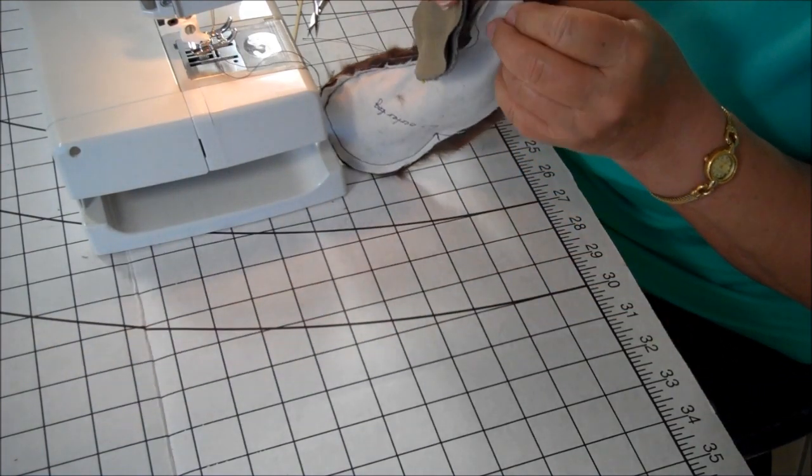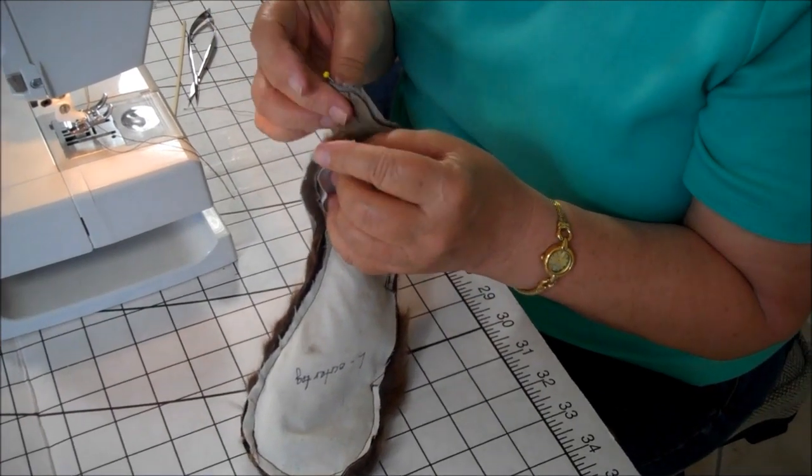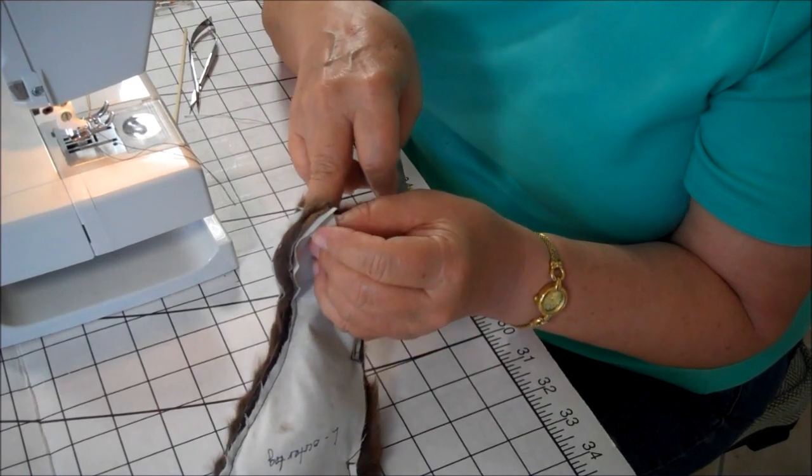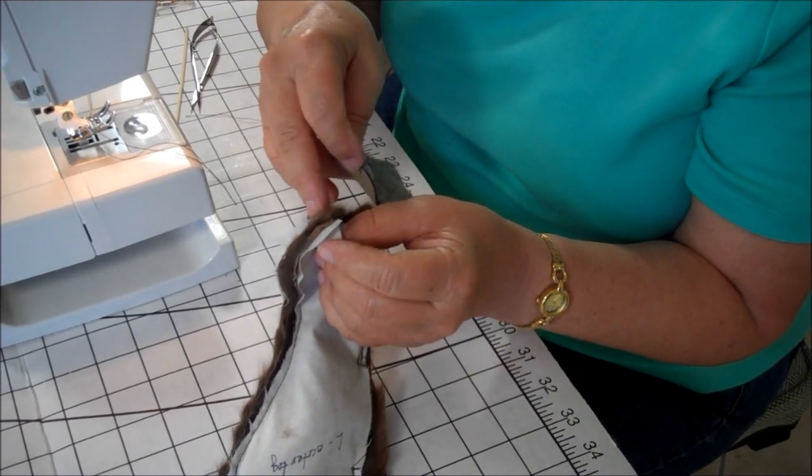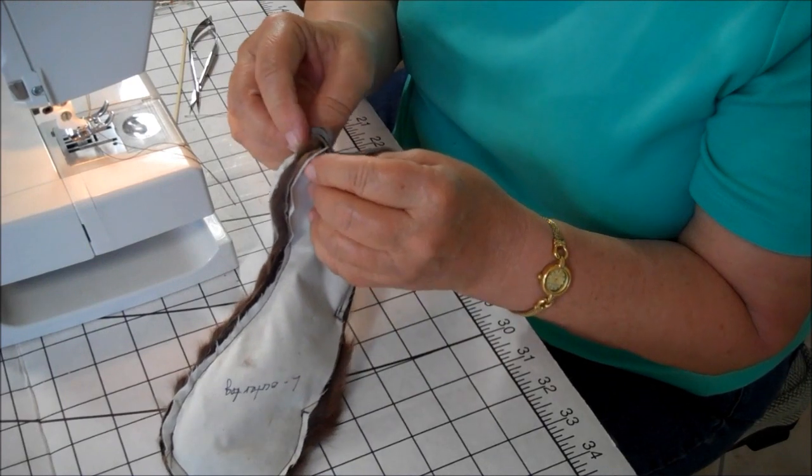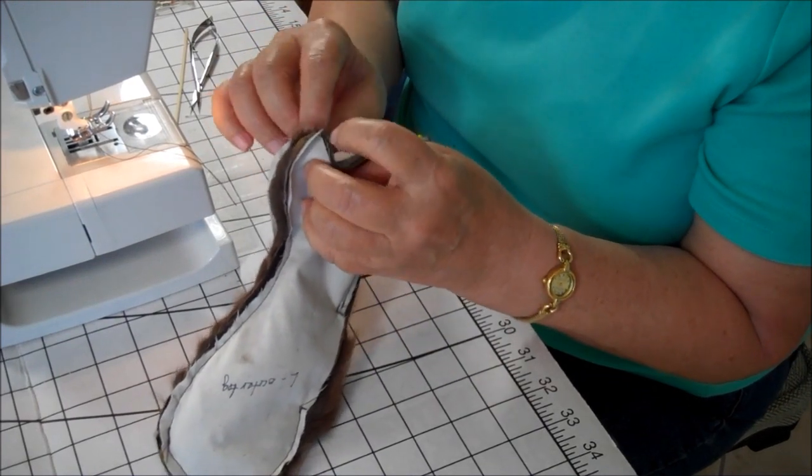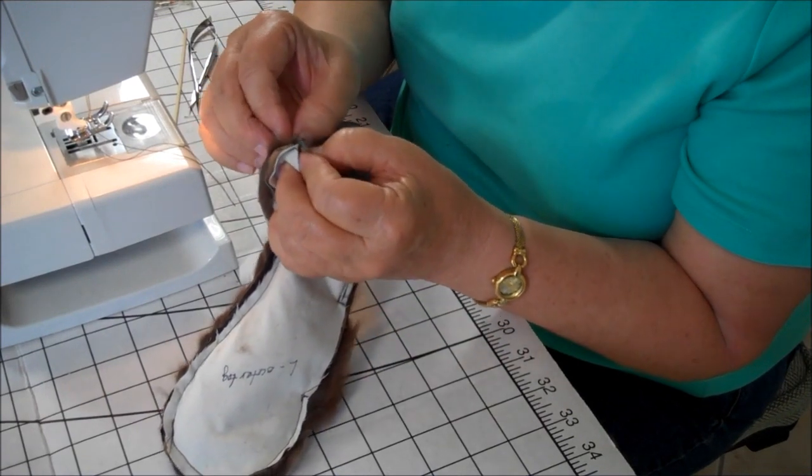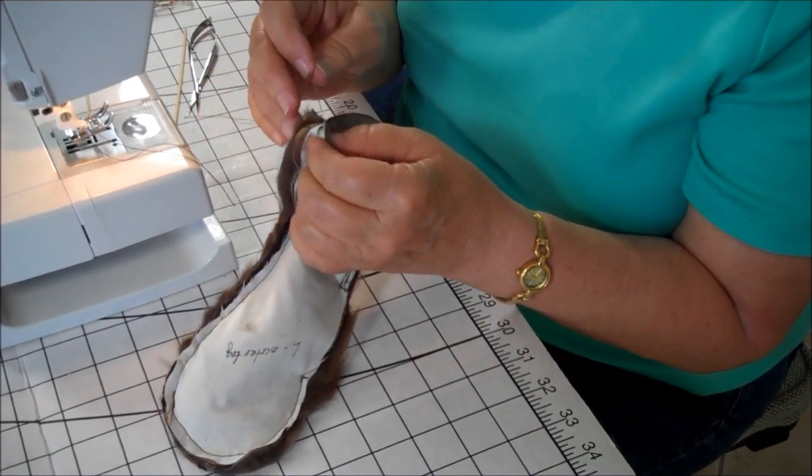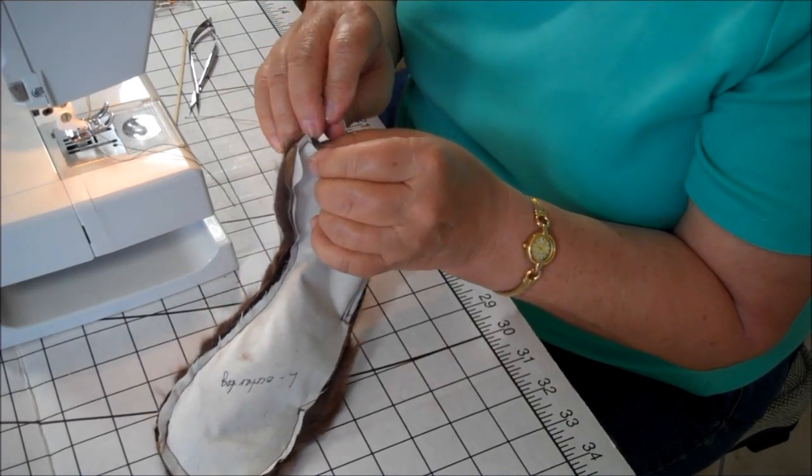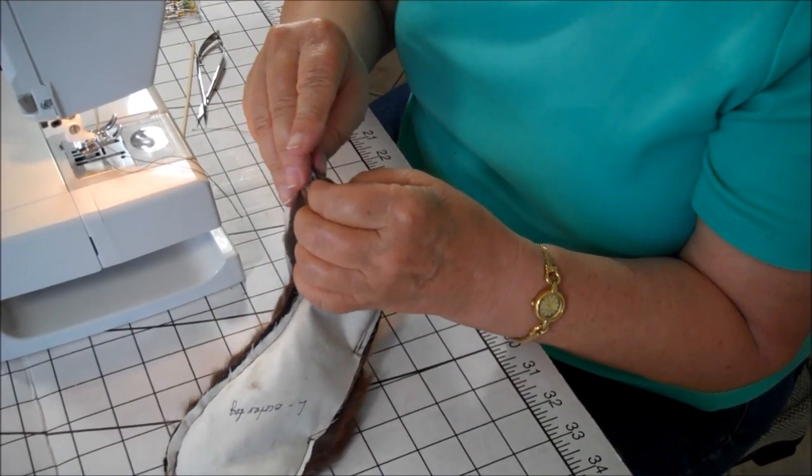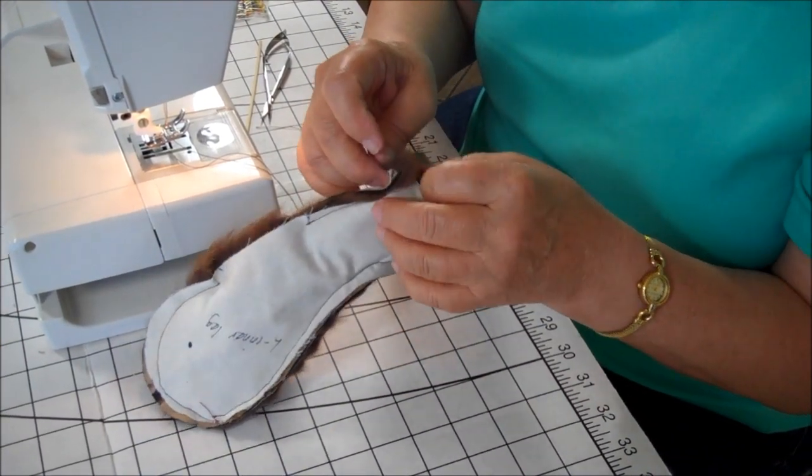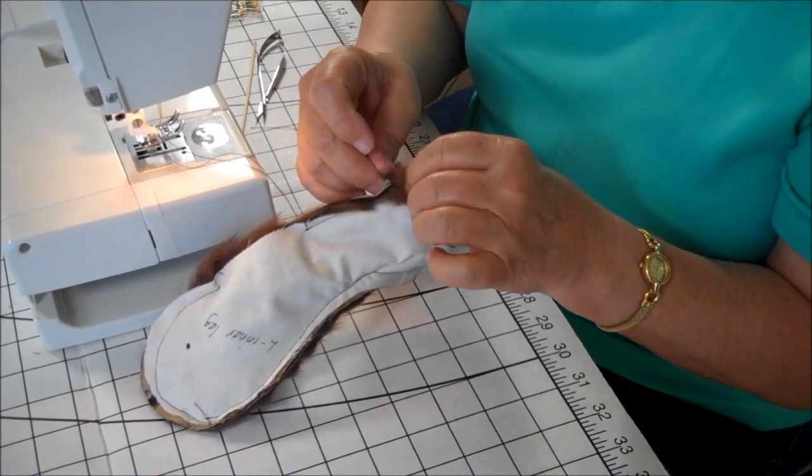You want to push as much of the fur in as possible, and the Ultra Suede padding goes on the inside because when you turn it out, then that will be the bottom of his foot. I'm matching the notch up to the seam. I think that this is one of the hardest parts to do on the bear is the foot pad.